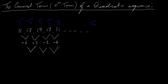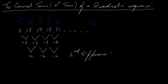Let's look at the second difference. Going from +6 to +2 I subtract 4; from +2 to −2 I subtract 4 again; and from −2 to −6 I subtract 4 again. The second difference is −4, constant all the way along, so this sequence is quadratic.